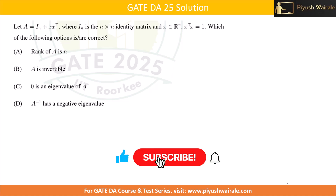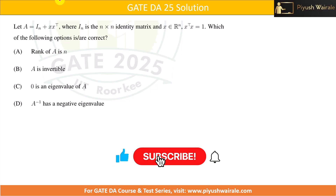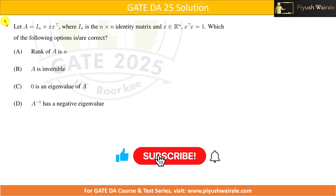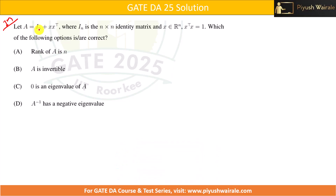In this video we are going to discuss a question from the GATE DA25 exam — a simple one-mark question. Let A equal the identity matrix of order n×n plus x times x-transpose, where x belongs to real numbers of order n, and it is given that x-transpose times x equals 1. We need to determine which of the following options are correct — it is an MSQ question with multiple correct answers.